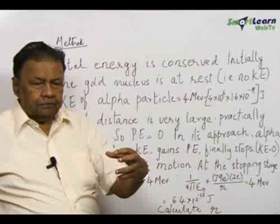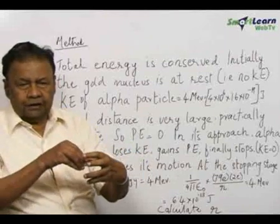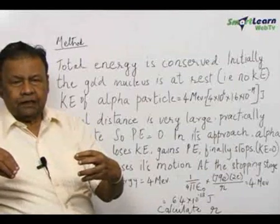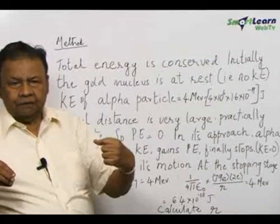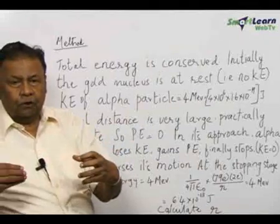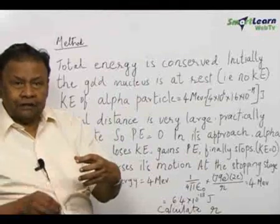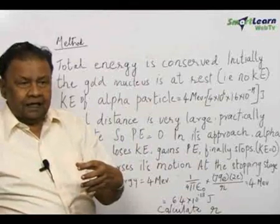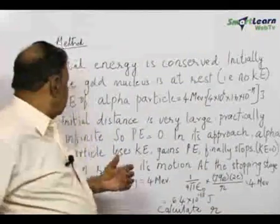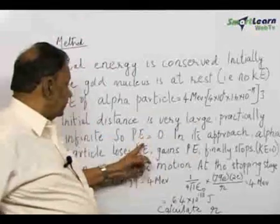The alpha particle comes nearer and nearer. The gold nucleus has a positive charge. The alpha particle also has a positive charge, therefore there is a repulsion. The alpha particle is now approaching, overcoming the repulsion. Therefore, it is losing its kinetic energy gradually, thereby it is gaining its potential energy. So initial distance is very large and therefore is 0, but in its approach the alpha particle loses kinetic energy and gains potential energy.